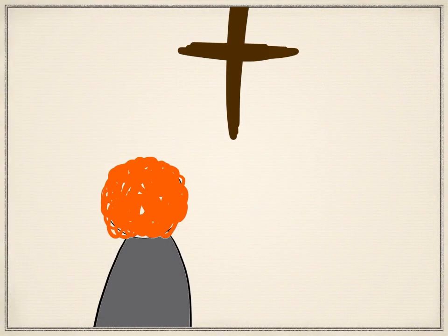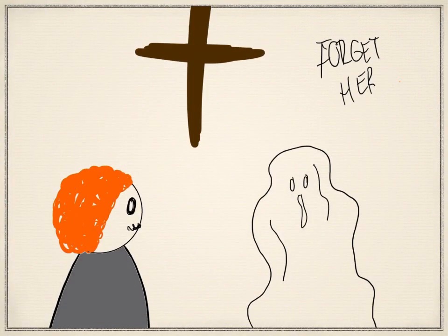Frederick goes to the sanctuary in search of Hippolyta, but instead of her, he sees a ghost that tells him to forget about Matilda.